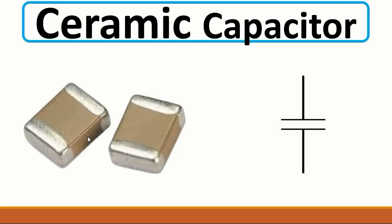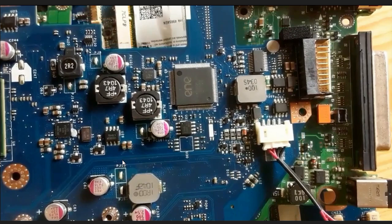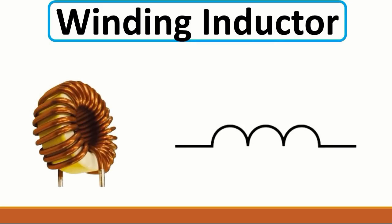Then we have one of the most important components in every motherboard — the ceramic capacitor. This is the symbol for the ceramic capacitor. As you can see on the motherboard, you can find ceramic capacitors everywhere. Please pay attention: this component has the same shape as the ceramic capacitor, but this is an inductor — you can see 'L' which means inductor. Ceramic capacitors are found around every IC on the motherboard.